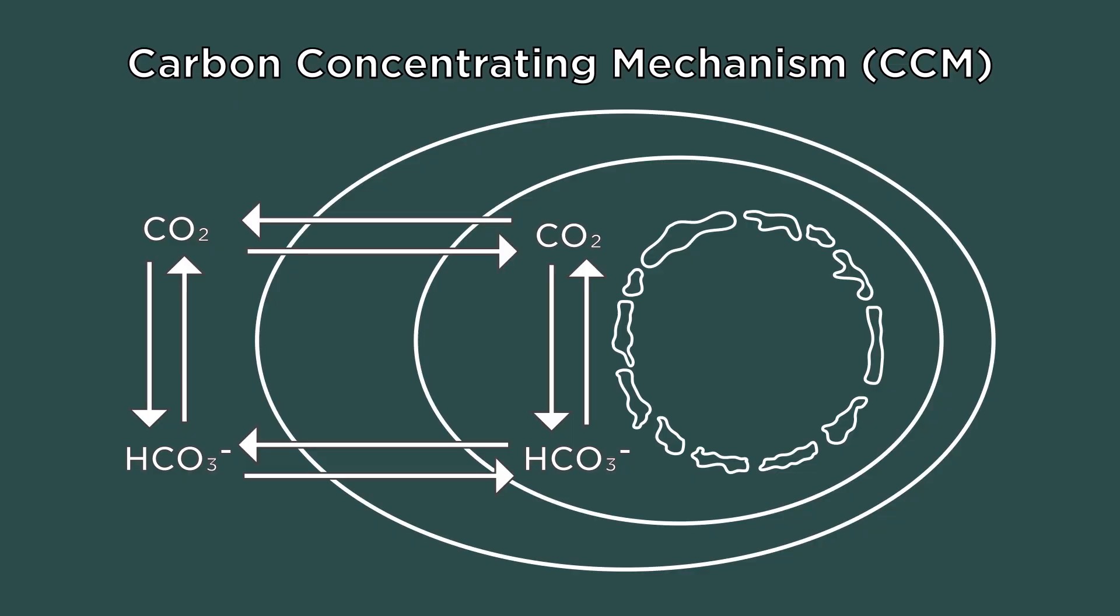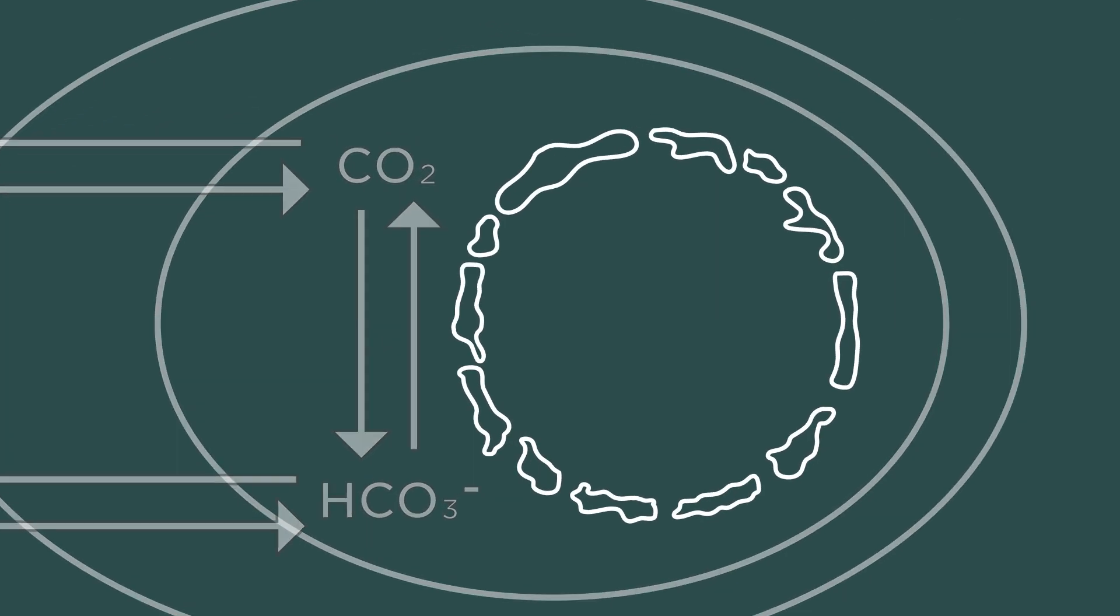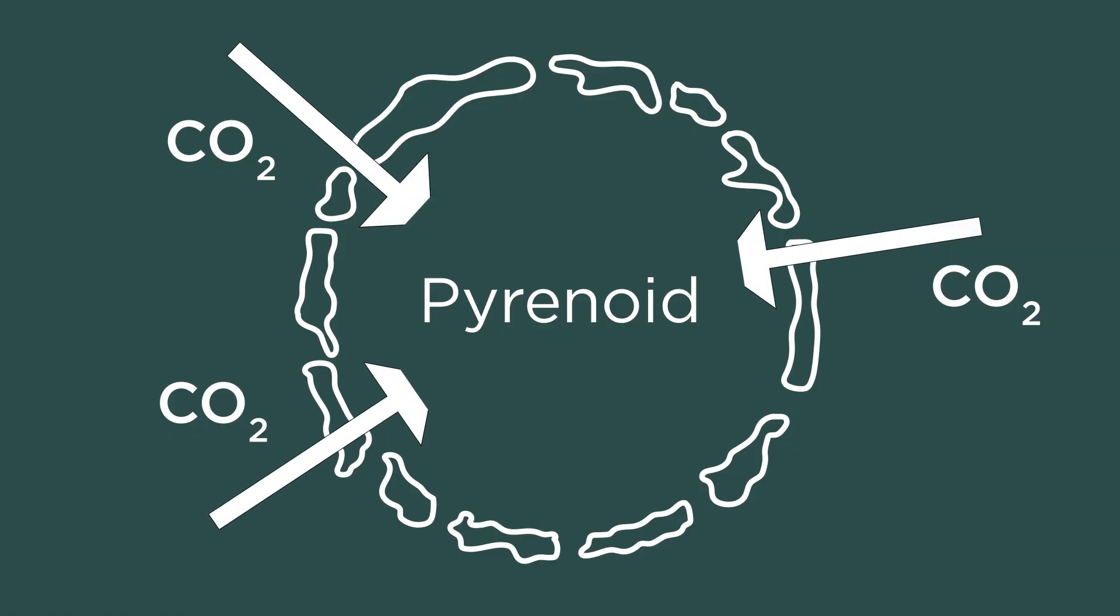The hard piece of the Carbon Concentrating Mechanism is the structure called the pyrenoid, which is the starch sheath that forms around a matrix within the algae cell, and then CO2 is pumped into the cell and then into this matrix. It's well known that the pyrenoid exists. It's been known to exist for over a hundred years. We didn't actually know what the signal for pyrenoid formation was.